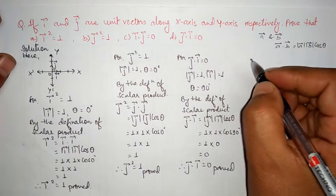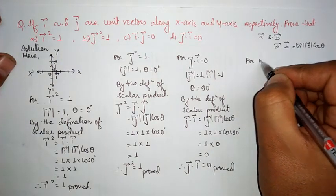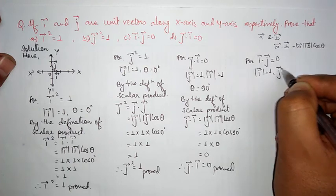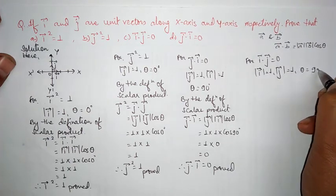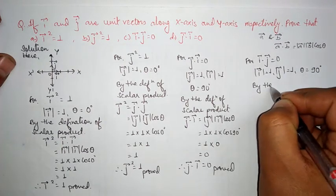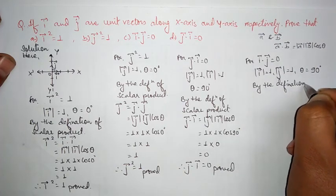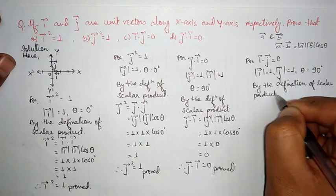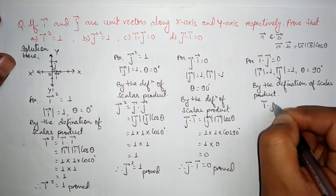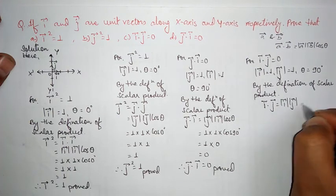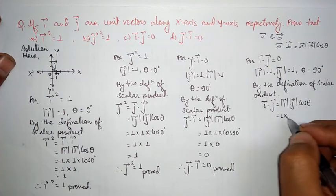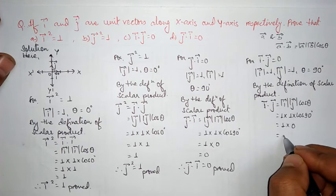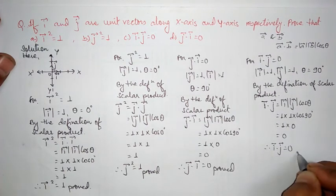Lastly, for i vector dot j vector equals 0: magnitude of i is 1, magnitude of j is also 1, and the angle between i and j is 90 degrees. By the definition of scalar product, i dot j equals magnitude of i into magnitude of j into cos of the angle between them. That is 1 into 1 into cos 90 degrees, which equals 1 into 0, so i vector dot j vector equals 0 is proved.